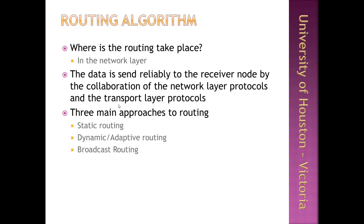The network layer is primarily responsible for routing. Together with the network layer, transport layer protocols have also been defined to get data from a source node to a destination node reliably. Routing happens at the network layer, and the transport layer ensures packets carry enough addressing information to be used for routing. There are three main approaches to routing.